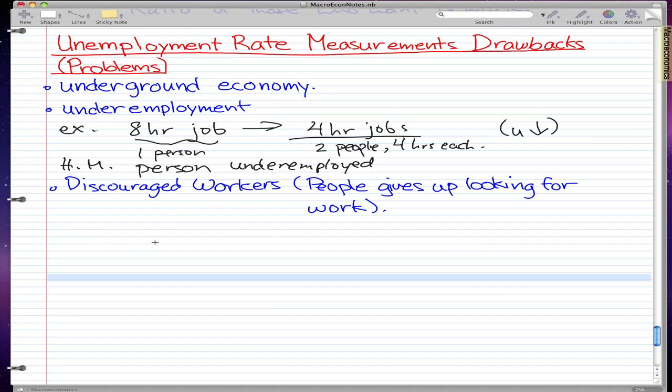Discouraged workers are people who give up looking for work. Another example: let's say the unemployed were two people and the labor force was five. Then the unemployment rate is 40%.